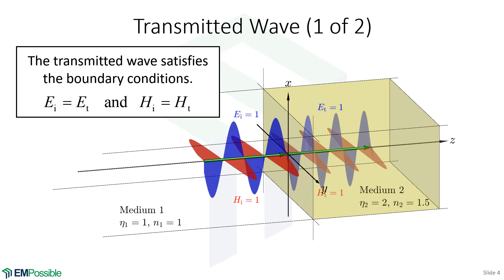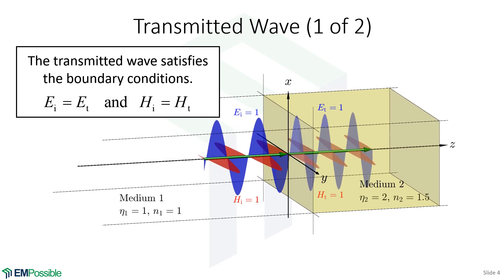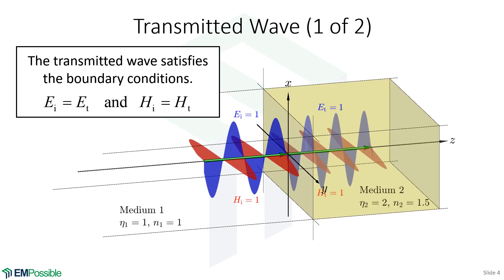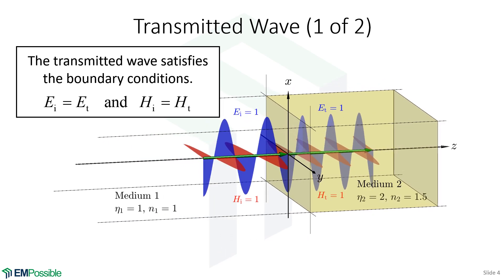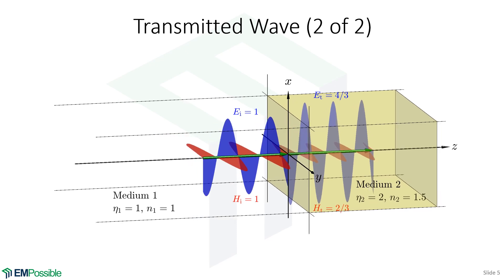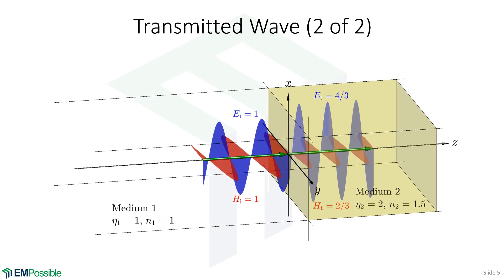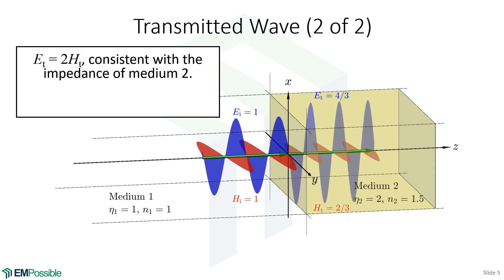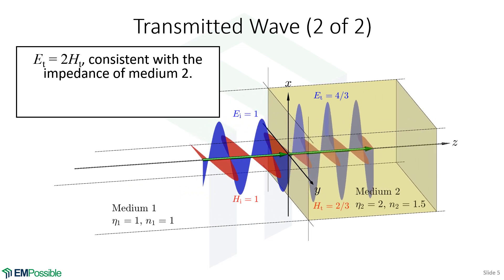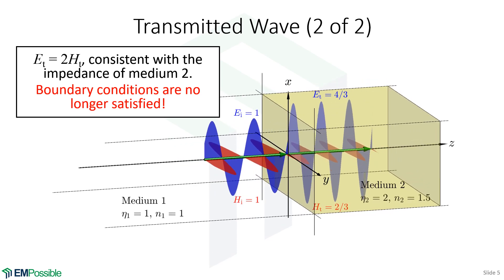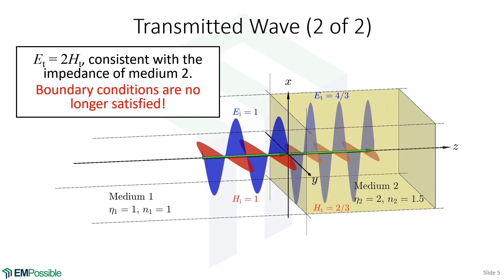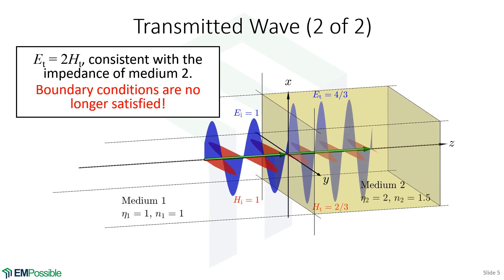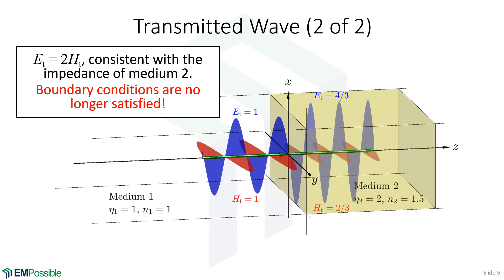So all seems well. Now let's think about the impedance of the medium. In medium two, the impedance is two. That means the magnetic field has to be half of the electric field, and it's not half in this case. So let's go ahead and make that the case. Now we have the magnetic field which has half the amplitude of the electric field. That satisfies our impedance condition in medium two, but we have a big problem. It doesn't seem like we can simultaneously satisfy our boundary conditions and the impedance of the medium. Our boundary conditions want E and H to be equal on either side of the interface, yet the impedance is changing the balance between the two. How do we reconcile it?